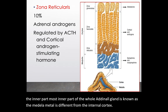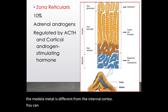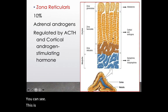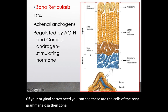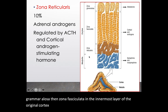Here you can see the histology of your adrenal cortex. These are the cells of the zona glomerulosa, then zona fasciculata, and the innermost layer of the adrenal cortex is the zona reticularis. These are the cells of the medulla.